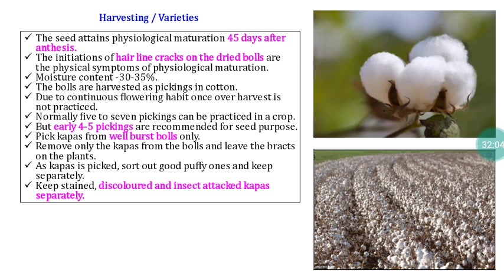Regarding harvesting: when the crop attains maturity, the bolls are called cup-passes. We have to harvest only the fully opened cup-passes — shown in the image as the white color sponge material. Initially a hairline crack appears on the bolls, then they completely burst open, and at that time we collect them. Moisture content at harvest is 30 to 35 percent. Since cotton has indeterminate flowering behavior with continuous boll development and maturity, for seed purpose only the first four to five pickings should be used.